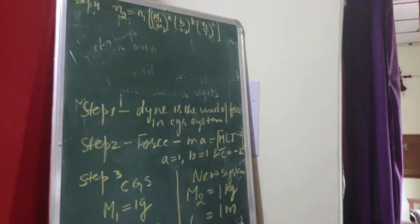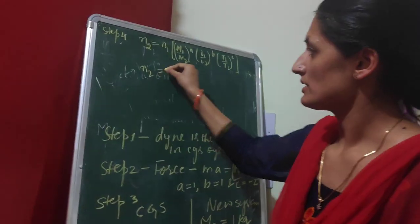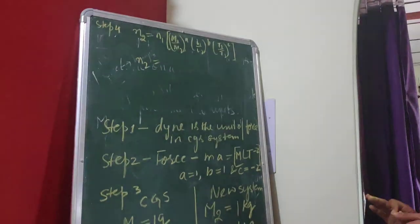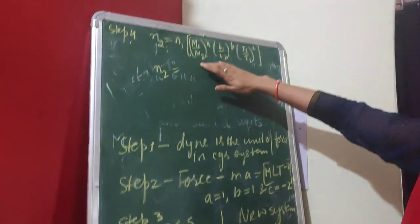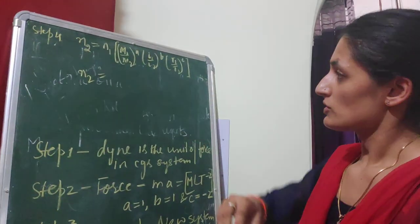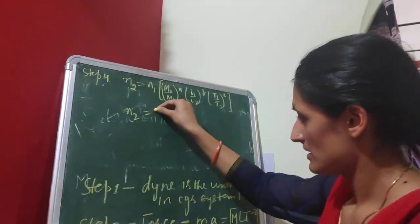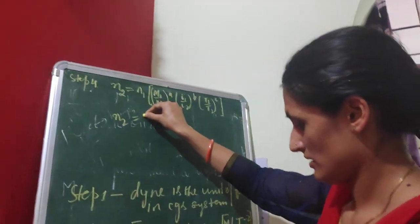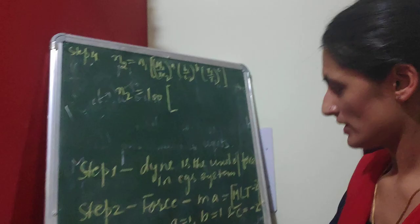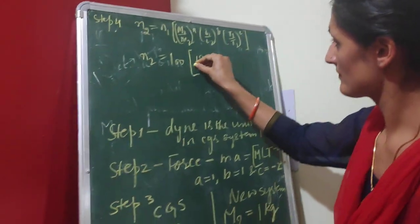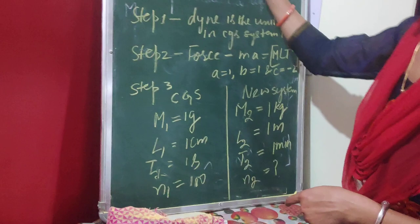Now put in the values. Always remember: the system you are converting into will always appear in the denominator. So N1 is 100, M1 is 1 gram over M2 (1 kilogram), raised to the appropriate powers.